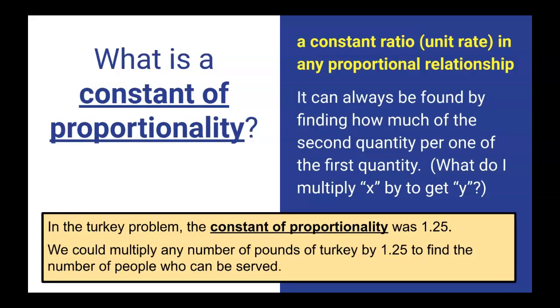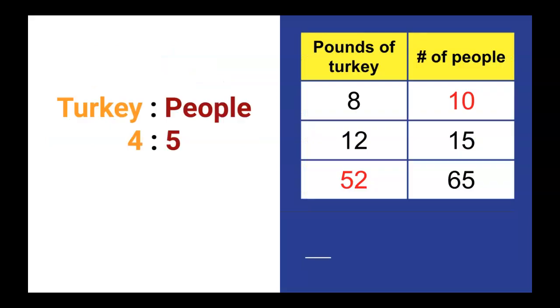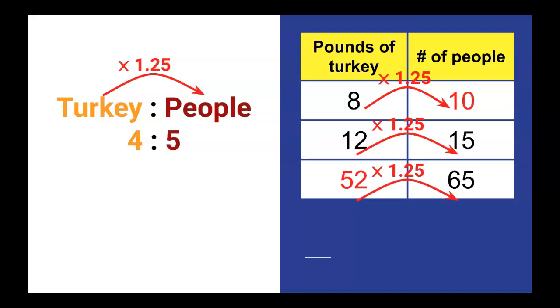In the turkey problem, the constant of proportionality was 1.25. We could always multiply any number of pounds of turkey by 1.25 to get the number of people who can be served. So, you'll see it here: 4 times 1.25 is 5, 8 times 1.25 is 10, 12 times 1.25 is 15, 52 times 1.25 is 65. This constant of proportionality happens every time.